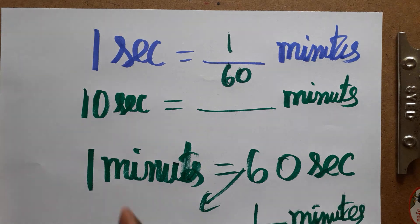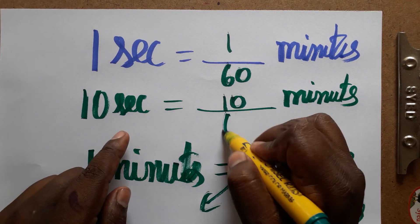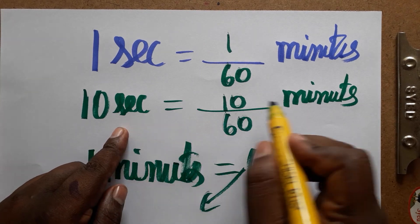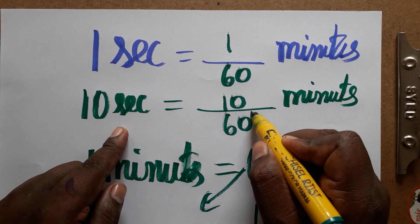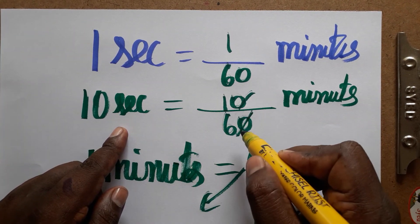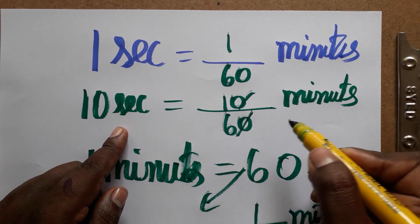10 seconds is dash minutes. It's 10 divided by 60. The reason is, from seconds to minutes, you always divide by 60. So 10 divided by 60 equals 1 by 6. 10 seconds is 1 by 6 minutes.